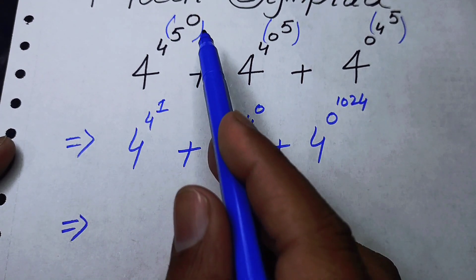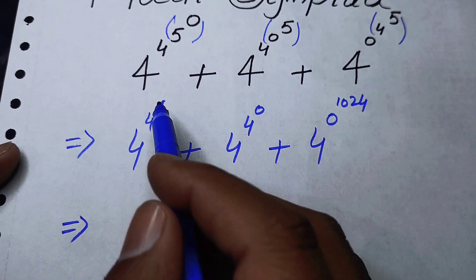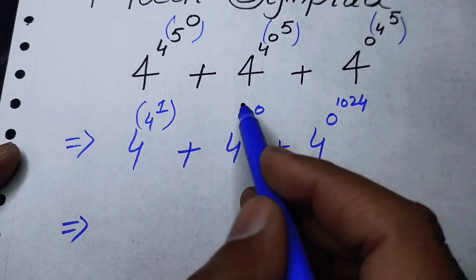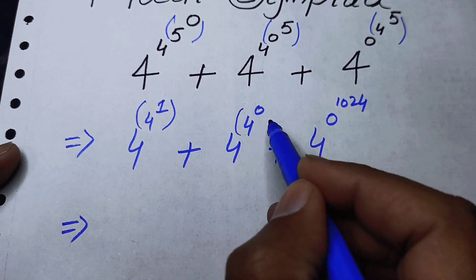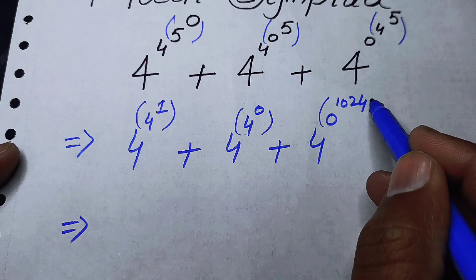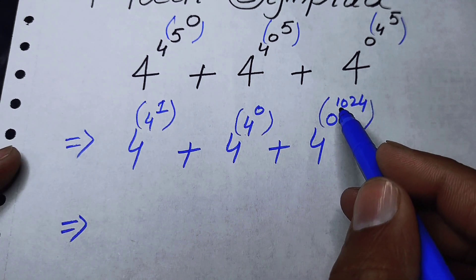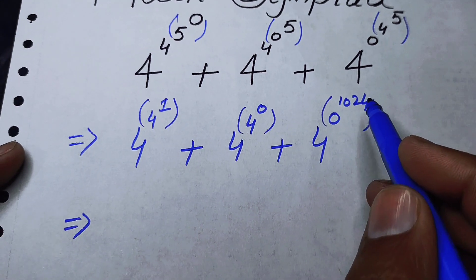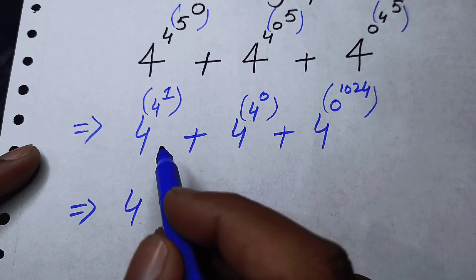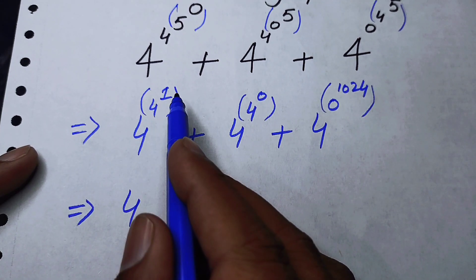Similarly, now we can decrease the exponent in this form and again solve the top exponents. The top exponents are: 4 to the power of 1, 4 to the power of 0, and 0 to the power of 1024.